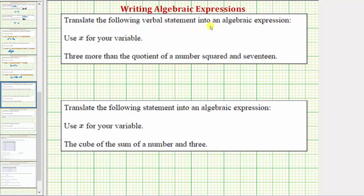We're asked to translate the following verbal statement into an algebraic expression. And we're told to use the variable x for the unknown number. So the given statement is three more than the quotient of a number squared and 17.